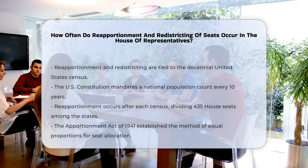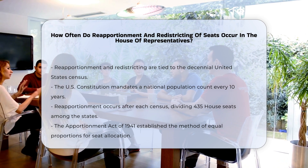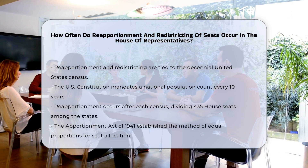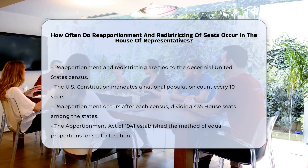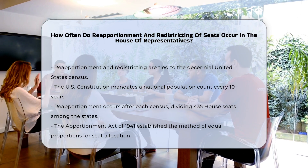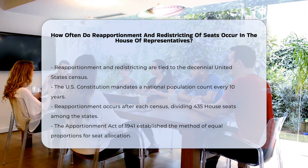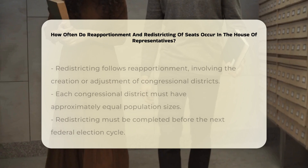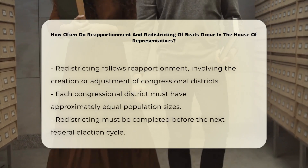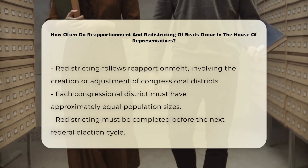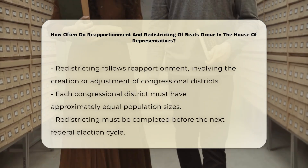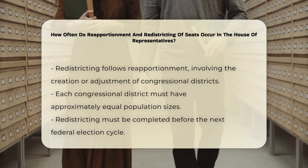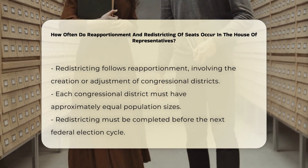This involves dividing the 435 seats in the House of Representatives among the 50 states based on their population sizes. The method of equal proportions, established by the Apportionment Act of 1941, is used to determine how many representatives each state is entitled to.